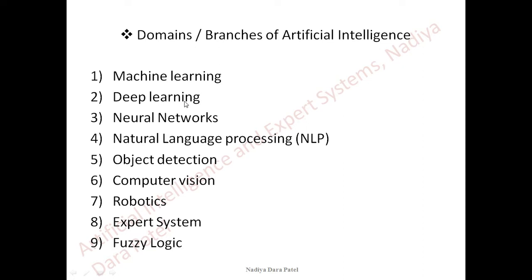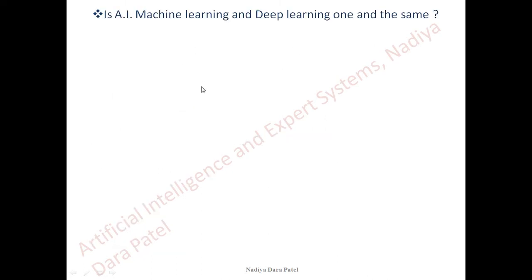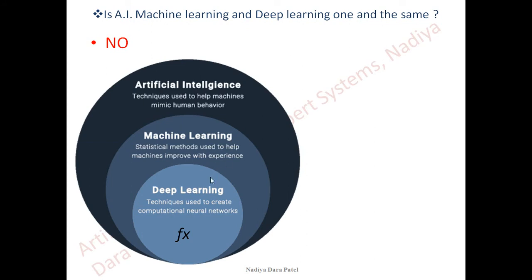Artificial intelligence, machine learning, and deep learning are often thought to be the same, which is not correct. They are different branches. As you can see in the diagram, if we consider AI as a domain, machine learning is a subset of the artificial intelligence domain. Deep learning is another subset of machine learning. So deep learning is a part of machine learning, and machine learning is a part of artificial intelligence.